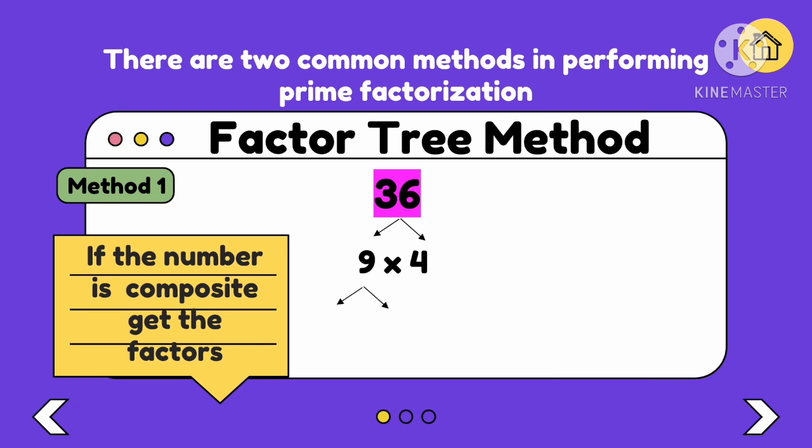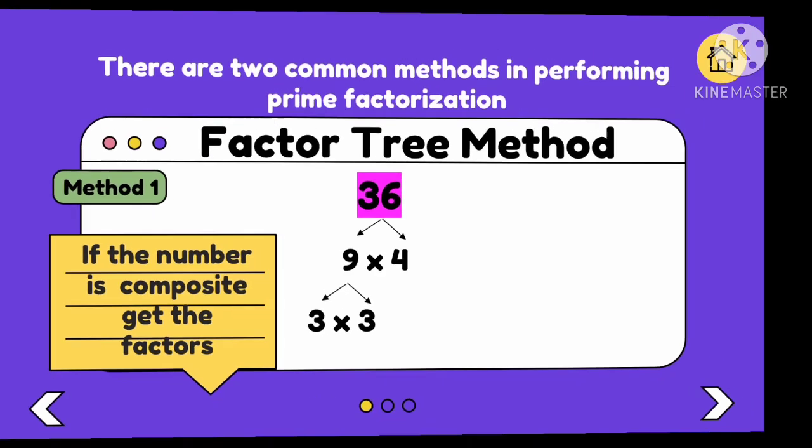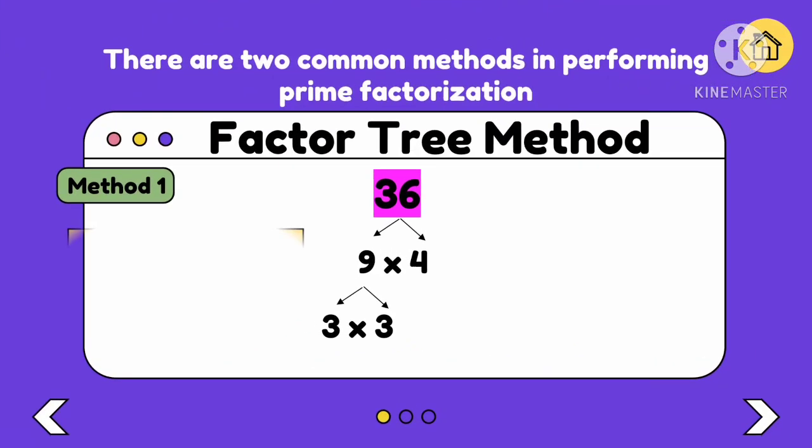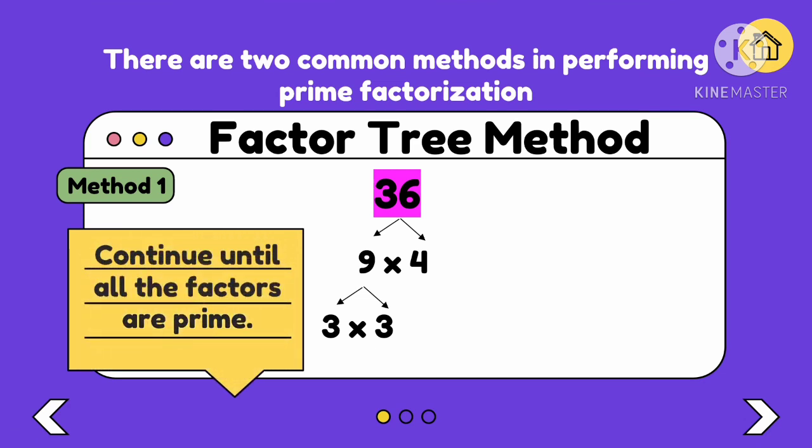The factors of 9 are 3 times 3. We'll just continue until all the factors are prime. Continue because 4 is composite. Get the factors of 4: 2 times 2. Circle the prime numbers. Since 3 is prime and 2 is also a prime number, circle them.